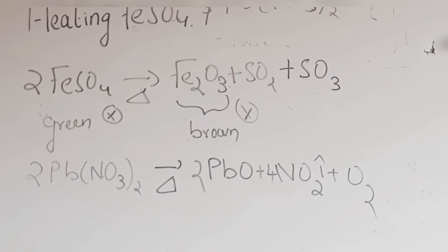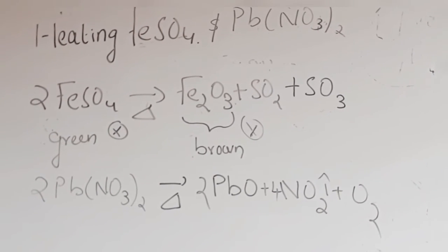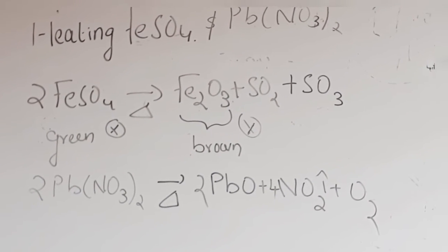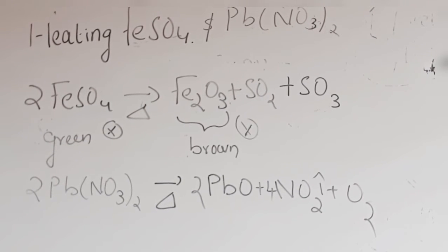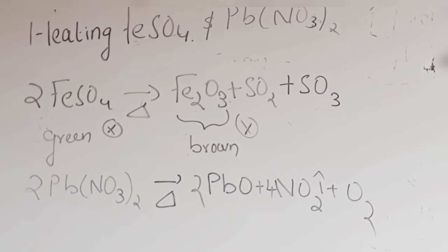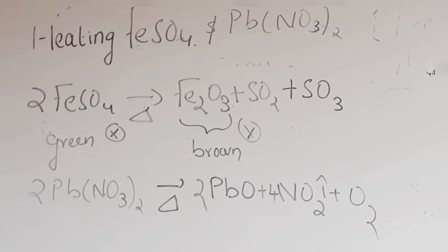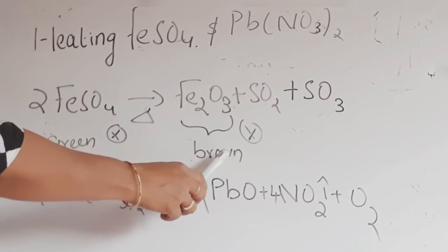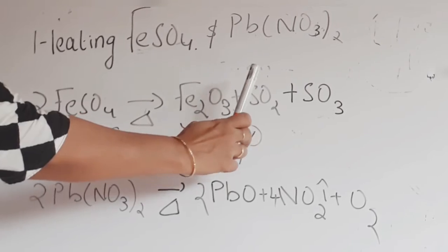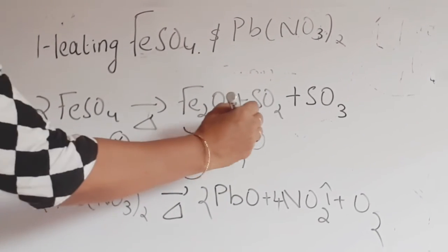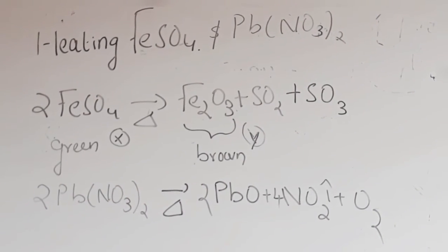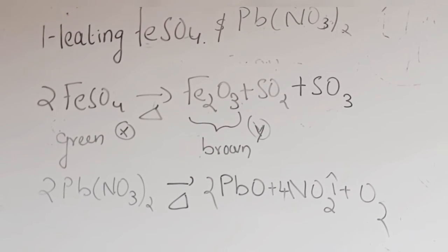The answer could be like this. The green color crystal is ferrous sulfate, FeSO4. When you heat this, it undergoes thermal decomposition reaction to form brown color Fe2O3, that is ferric oxide. The smell of burning sulfur is due to the production of sulfur dioxide and sulfur trioxide.